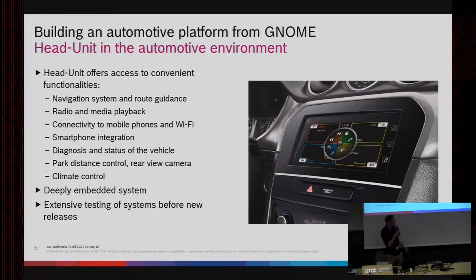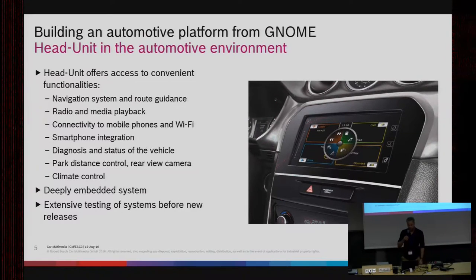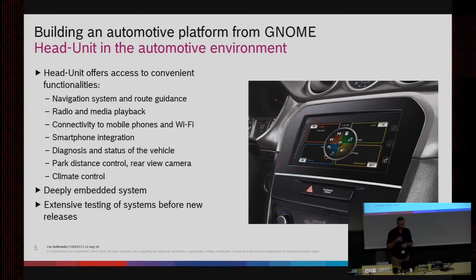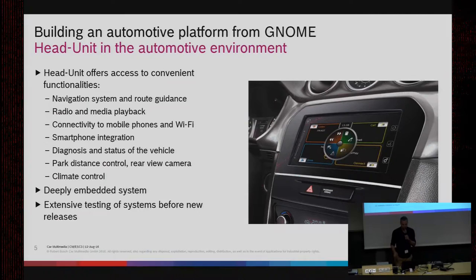Nowadays the head unit looks more like a 7 to 10 inch display mostly in portrait or landscape mode. The head unit offers convenience functionality — most famously navigation and route guidance. The head unit started with radio and media playback. Nowadays they contain connectivity to mobile phones or Wi-Fi, handling Bluetooth to play audio or call somebody. Even newer is smartphone integration — Apple CarPlay and Android Auto — where you connect your mobile phone via USB or Wi-Fi and the phone takes over control of the screen.